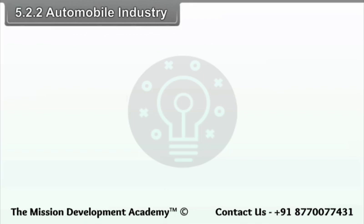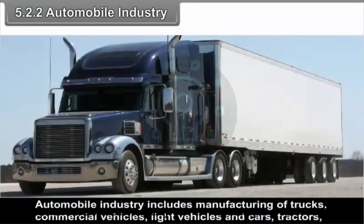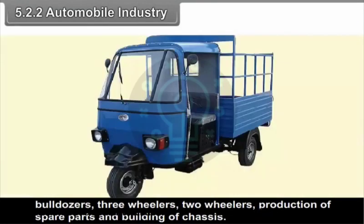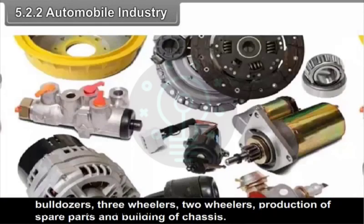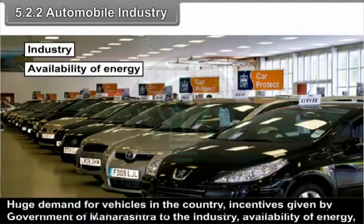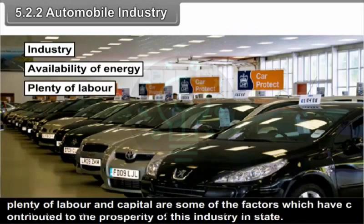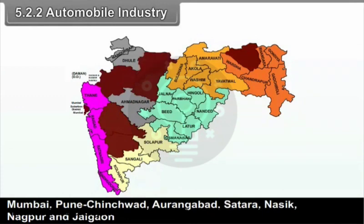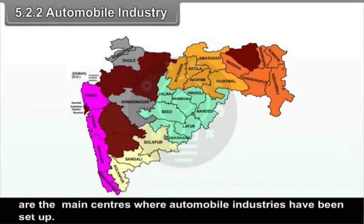The automobile industry includes manufacturing of trucks, commercial vehicles, light vehicles and cars, tractors, bulldozers, three-wheelers, two-wheelers, production of spare parts and building of chassis. Huge demand for vehicles in the country, incentives given by the government of Maharashtra to the industry, availability of energy, plenty of labour and capital are some of the factors which have contributed to the prosperity of this industry. Mumbai, Pune-Chinchwad, Aurangabad, Satara, Nasik, Nagpur and Talegaon are the main centres where automobile industries have been set up.